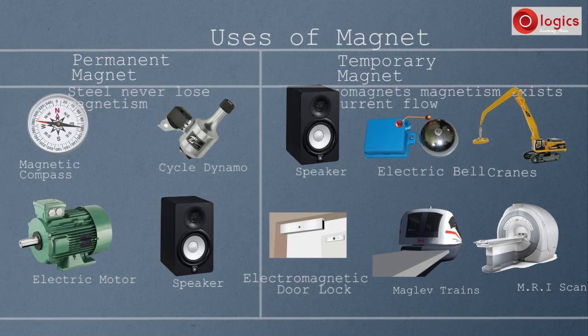Let us summarize the uses of magnets. Permanent magnets can be made using steel and their magnetism is permanent. Examples include magnetic compasses, cycle dynamos, electric motors, and speakers. Electromagnets are temporary magnets — magnetism exists only when current flows. Examples include speakers, electric bells, cranes, electromagnetic door locks, Maglev trains, and MRI scanners.